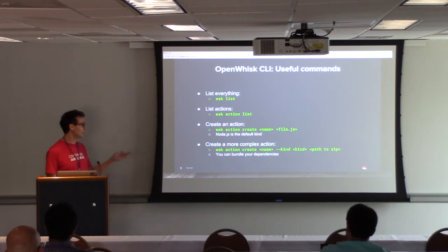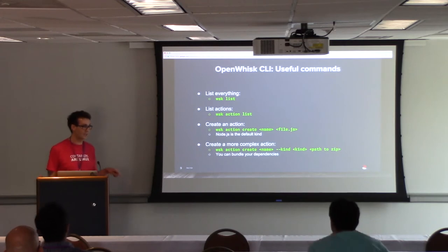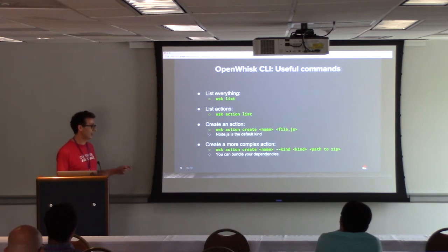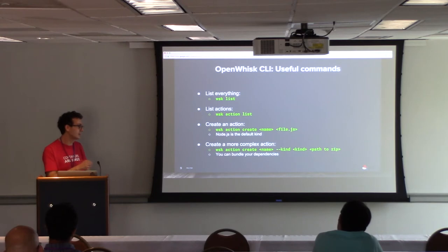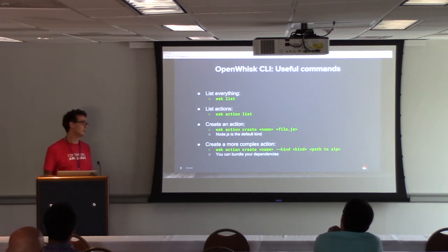More interesting is creating an action. The simplest way is 'wsk action create' — give the action a name and provide a file. By default it assumes a JavaScript file and runs it in a Node.js container. You can create more complex actions by providing a zip file, in which case you provide a 'kind' to tell OpenWhisk whether it's Node.js or Golang. This lets you bundle dependencies with your action, such as Node modules.